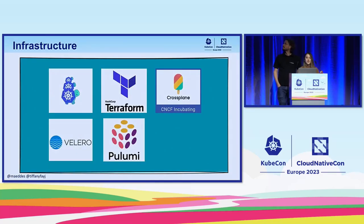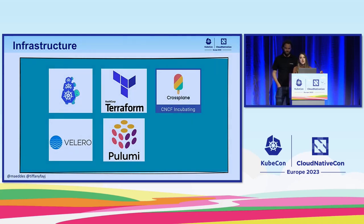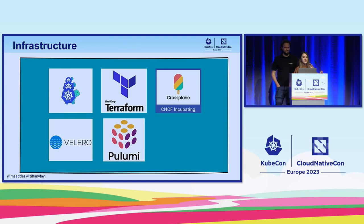First, on infrastructure: there is Cluster API — the turtles all the way down thing — and Velero. These two are specifically focused on Kubernetes. Cluster API uses CRDs in an existing Kubernetes cluster to spin up new clusters and manage them. Velero backs up workloads and persistent volumes. Then on the other side, there's Terraform, Crossplane, and Pulumi — they're infrastructure as code and can be used to create a bunch of different resources, including Kubernetes infrastructure.